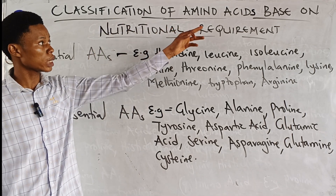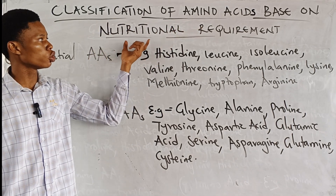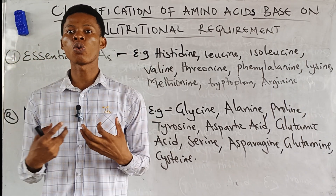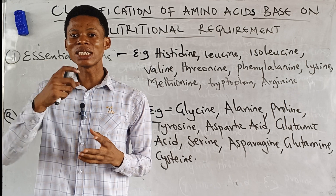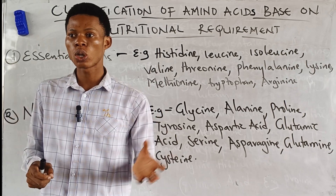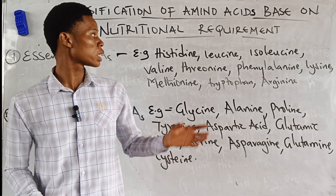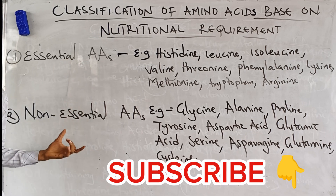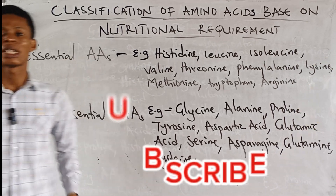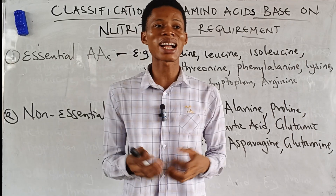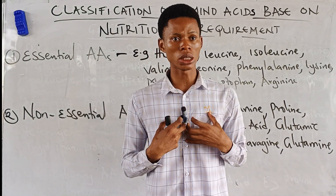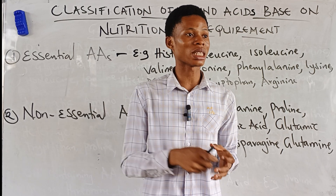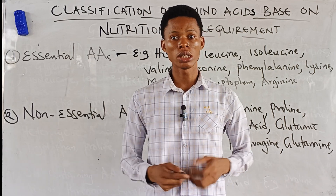Classification of amino acids based on nutritional requirements: based on whether our body needs an amino acid or not, we can classify amino acids into essential amino acids and non-essential amino acids. There are some amino acids that can be synthesized by our body, and some that cannot be synthesized in the body.